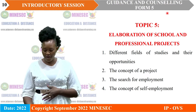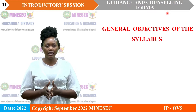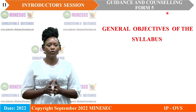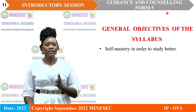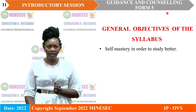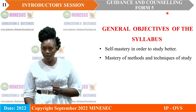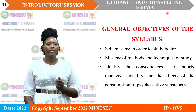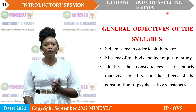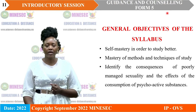This is the program for Form 5. We are also going to look at the general objectives of this syllabus, coined with respect to the orientation laws of Cameroon. The first objective is self-mastery in order to study better. The second is mastery of study methods and techniques, including methods such as the SQ3R study method and mind mapping. The third objective is identifying the consequences of poorly managed sexuality and the effects of the consumption of psychoactive substances.